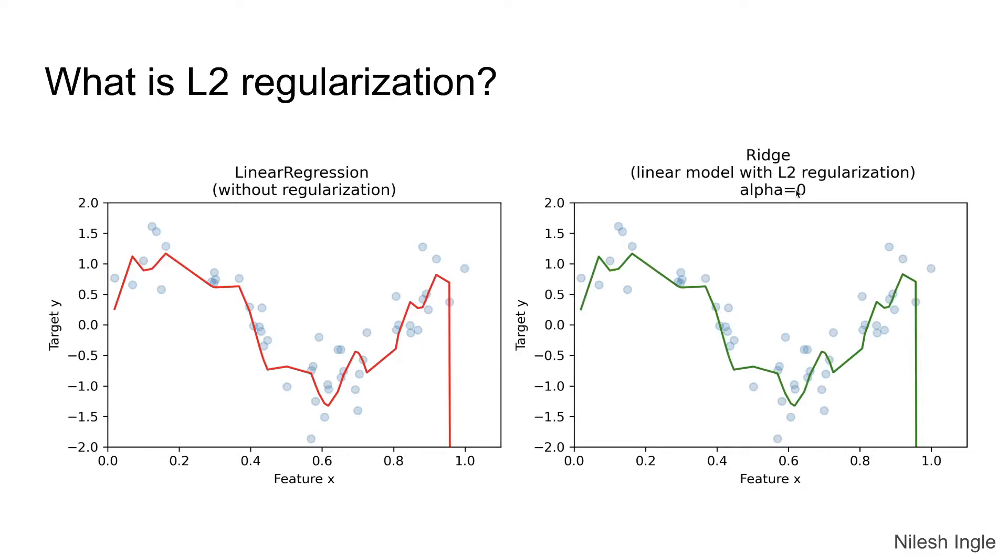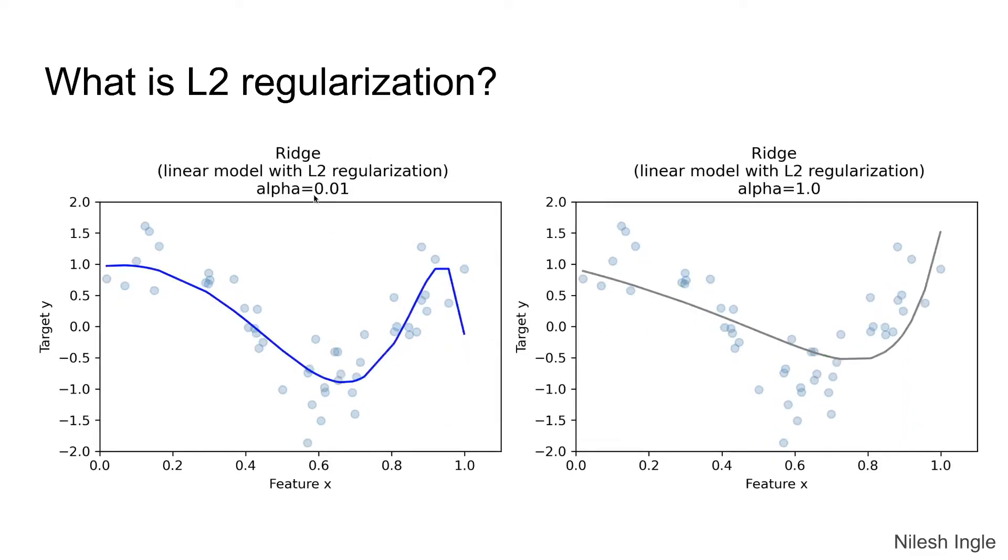Now if we set the value of alpha to zero there is no regularization, and therefore the plots look similar in both the cases.